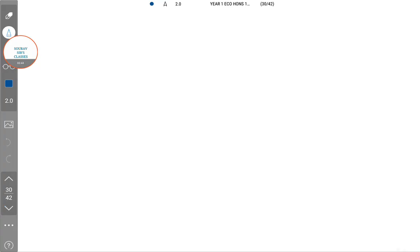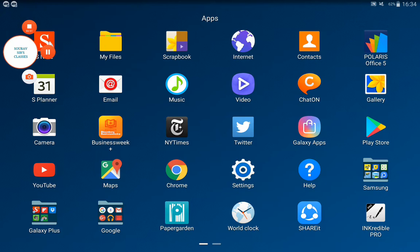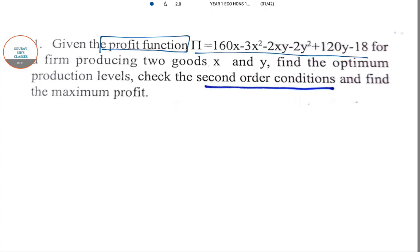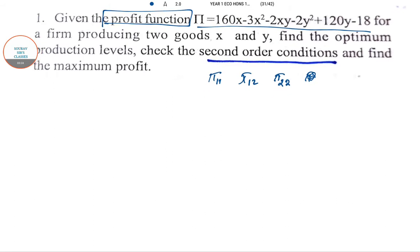Now let's go to the next question. This question we have a direct profit function given, and we need to find the second order condition and maximum value of the profit. For two variable cases, the maximum value is different, so you have to find π₁₁, π₁₂, π₂₂ because π₁₂ and π₂₁ are the same.